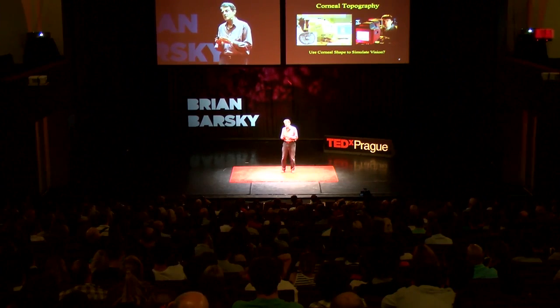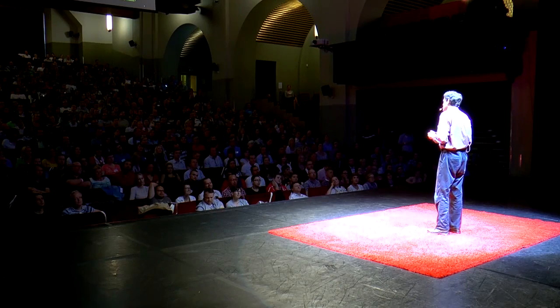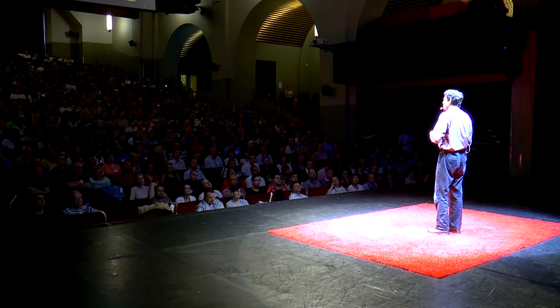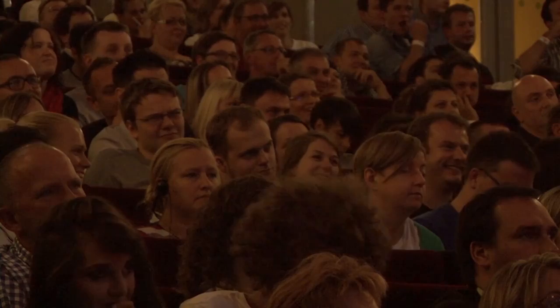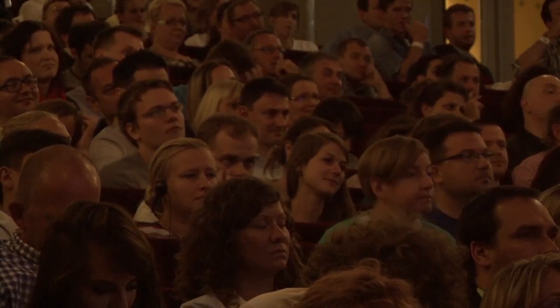Could we take information from the cornea and use it to simulate how that patient is seeing? Indeed, we have an instrument called a corneal topographer — a fancy name that simply means measuring the shape of the cornea. The instrument is shown here. I have to confess the image of me with it is a little embarrassing; the New York Times came to photograph my research, took 200 photos, and chose to run the one that looked most like a crazy professor. But this was our first attempt at simulating vision from the shape of the cornea.